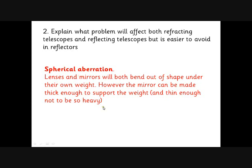But of course, with a mirror, you can put as much support as you like underneath the mirror to stop it bending, whereas with a lens, the light has to go through the lens. So you can only really support it around the edge. So as it gets heavier and heavier, it's harder to keep it in shape.